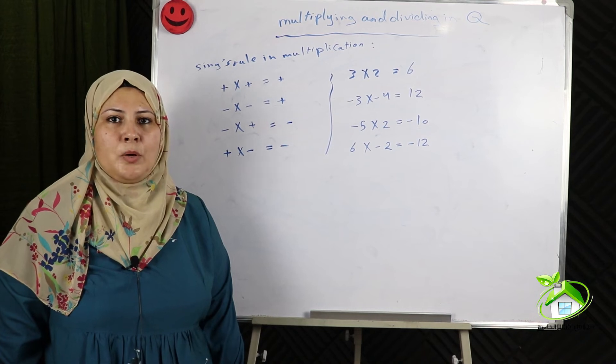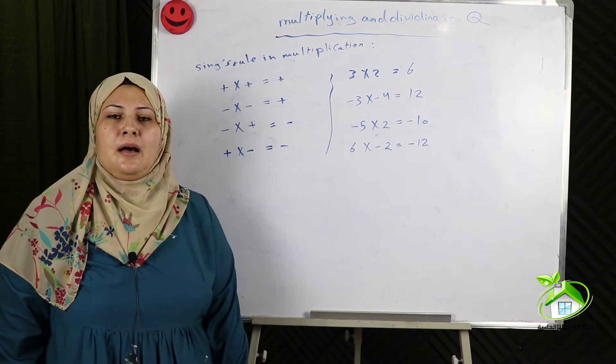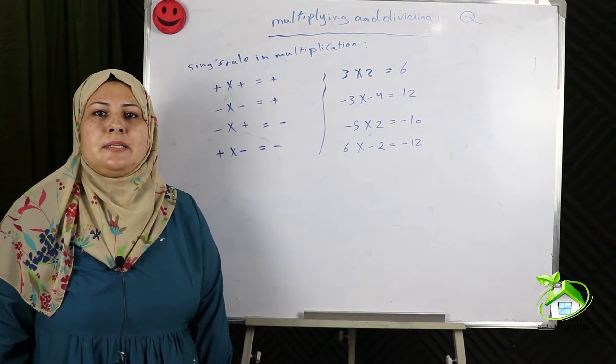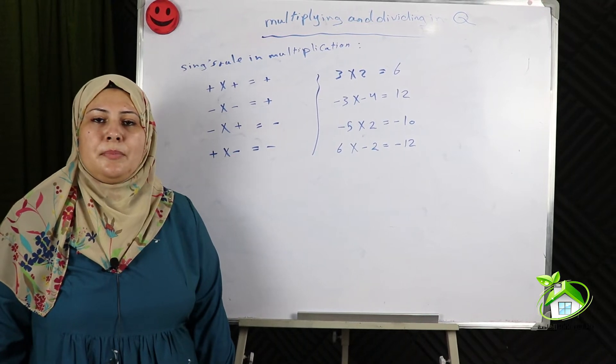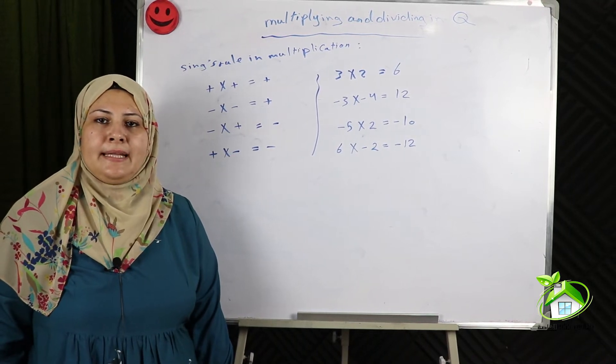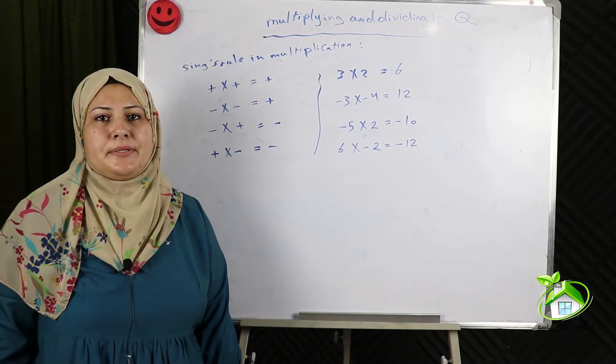Hello, grade 7. How are you? I hope you are okay. I will explain lesson 4, unit 1, algebra: multiplying and dividing rational numbers.